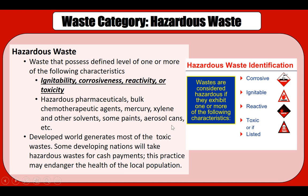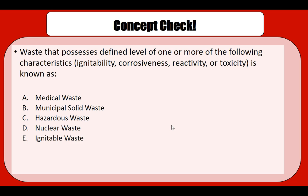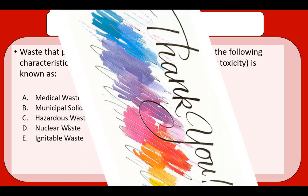Examples of hazardous waste include pharmaceutical bulk chemotherapeutic agents, mercury, xylene and other solvents, as well as paint and aerosol products. The developed world generates most toxic waste, but some developing nations also generate waste and end up taking waste from developed nations for cash payment, which poses significant damage to their local populations and environment. Quick concept check: waste that exceeds a defined level of ignitability, corrosiveness, reactivity, or toxicity is known as hazardous waste. Thank you for listening, bye.